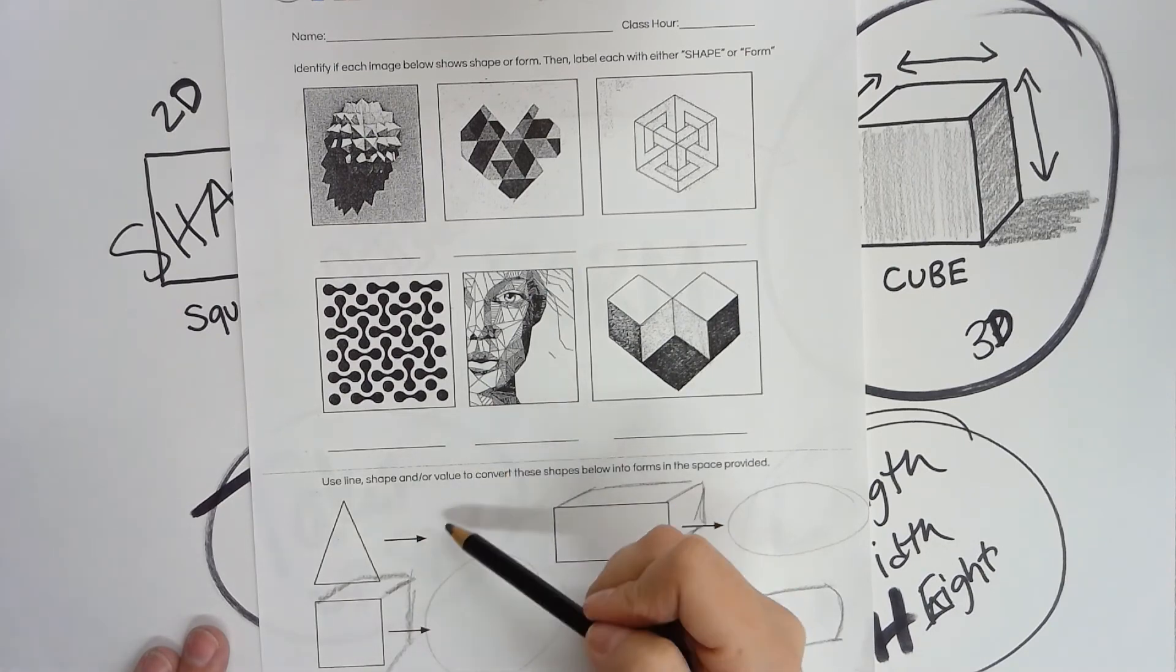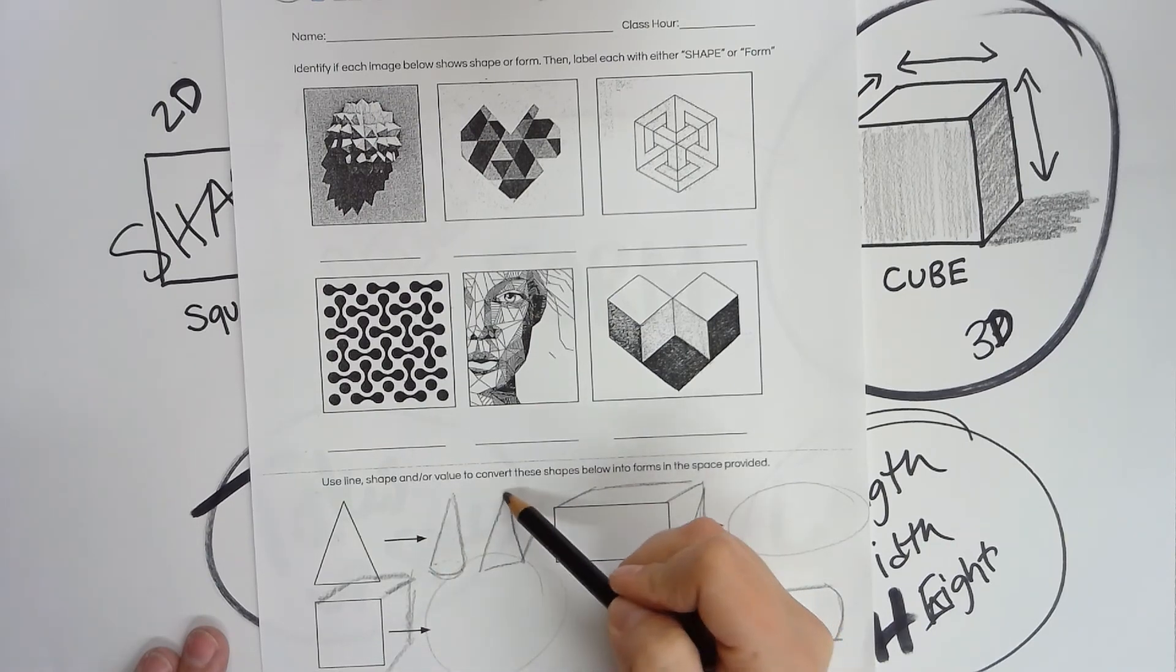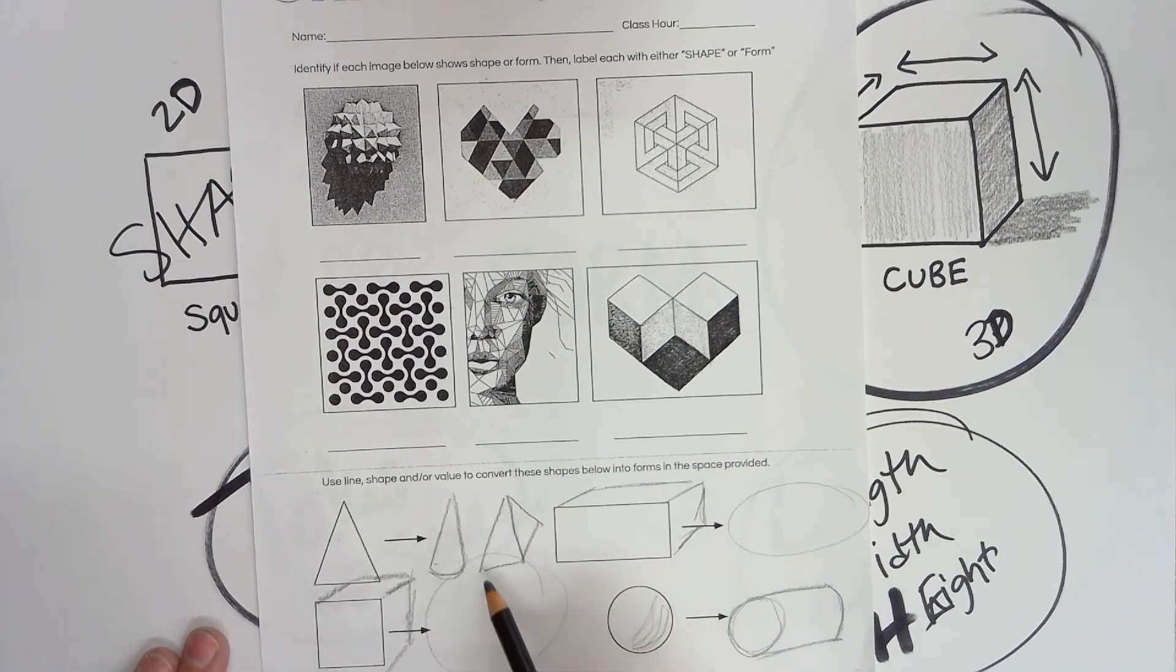This triangle, you also have a couple options. You could make it into a cone, think like an upside-down ice cream cone. Or it could be a prism, a triangular pyramid, that is. A triangular pyramid or a square pyramid. So, those are some of the different ways that you convert them into forms. And that's what I want you to do on that last bit.